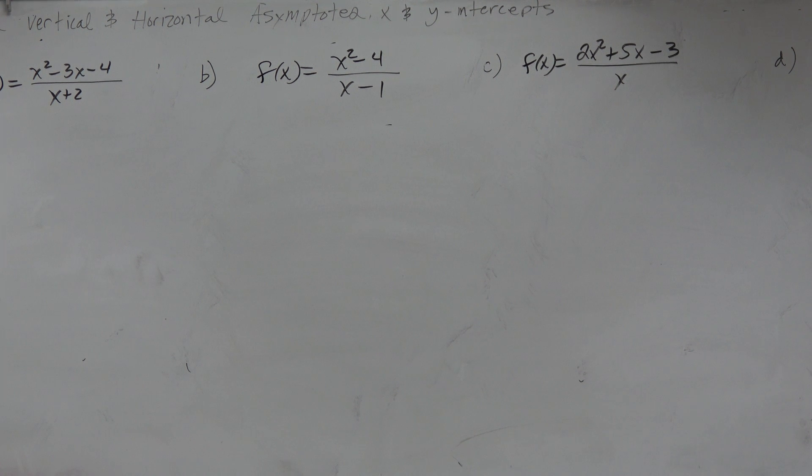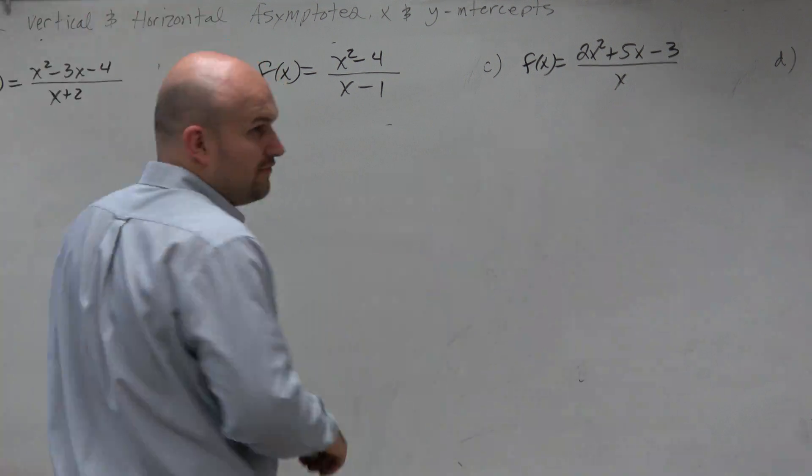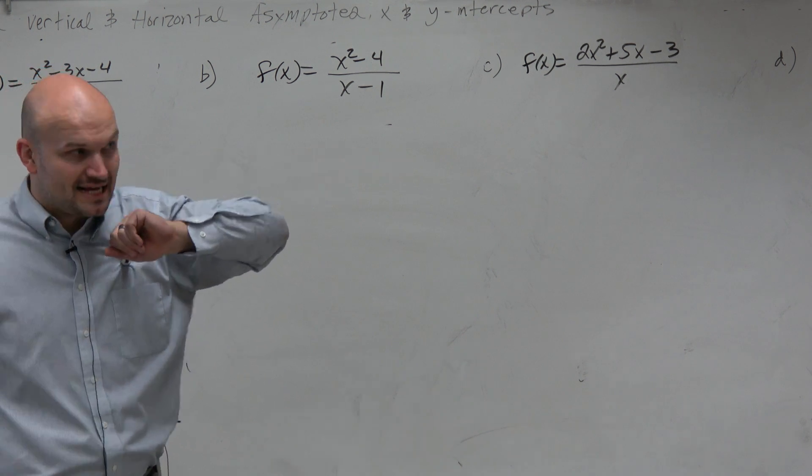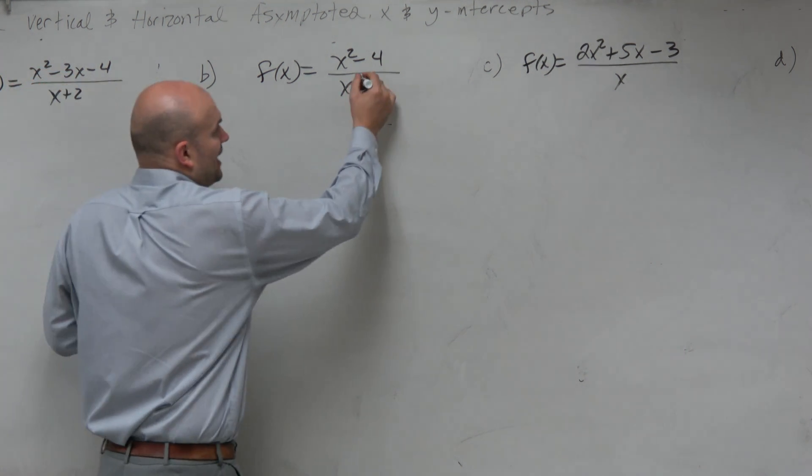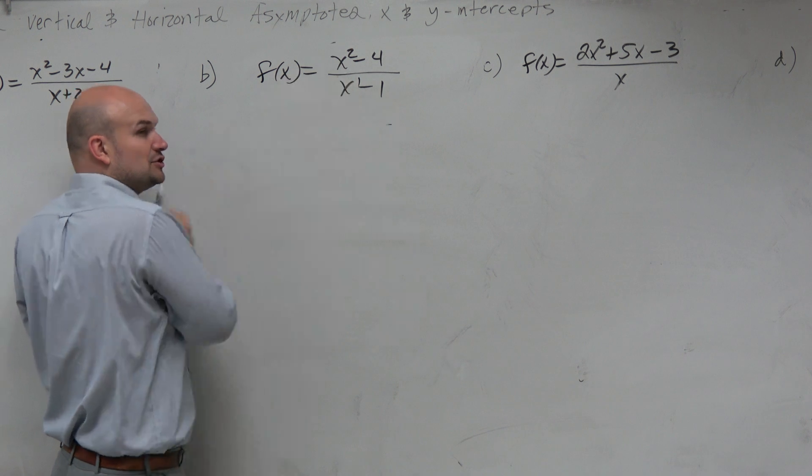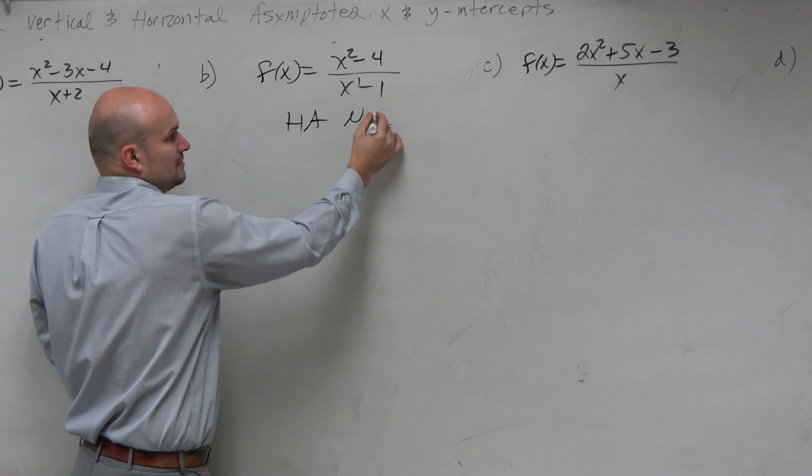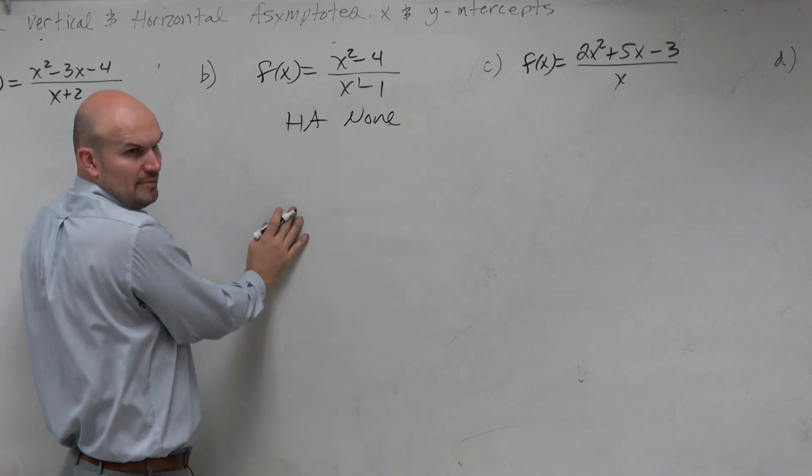That brings up the next thing after horizontal asymptotes, which is when there is a slant asymptote. First of all, understand that the degree of my numerator is larger than the degree of my denominator, so there is not going to be a horizontal asymptote that exists. We'll look at the graph to confirm that.